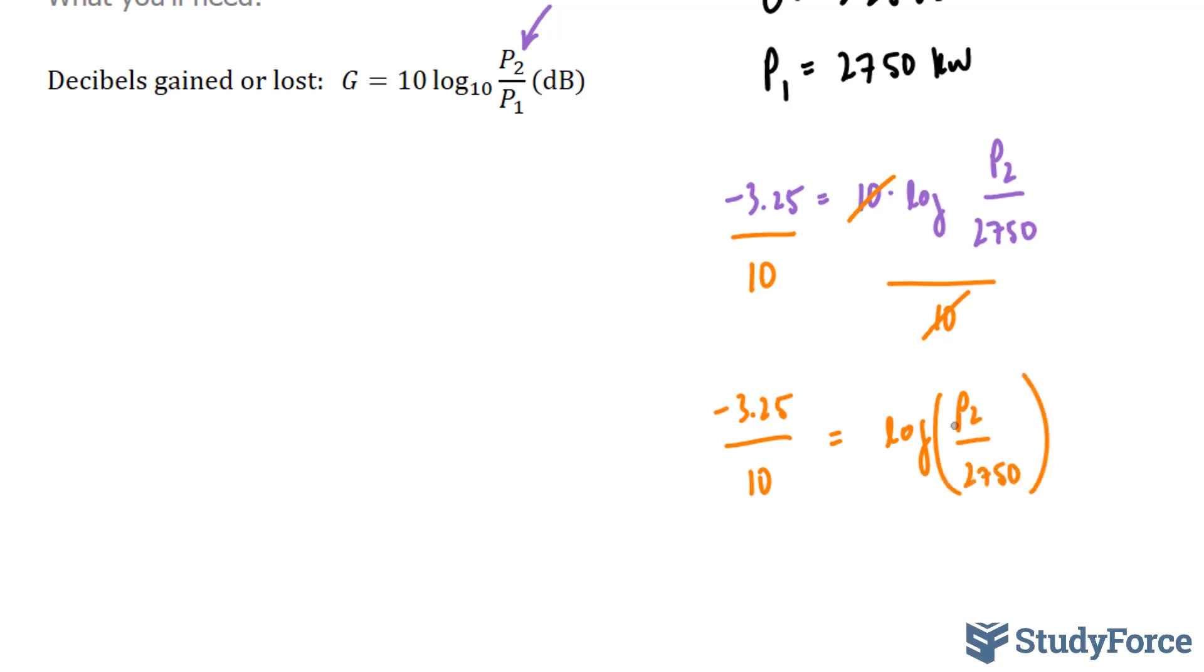Now, to isolate for P2, and since this log has a base 10, I can raise both sides of the equation as powers to the base 10. This will become the exponent of the base 10, and this will become the exponent of the base 10. The reason why I'm doing this is because this log and this 10 will go away.